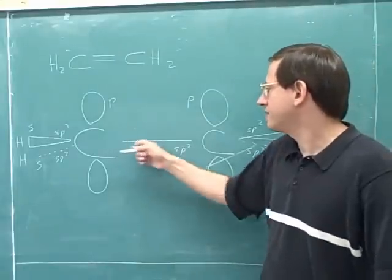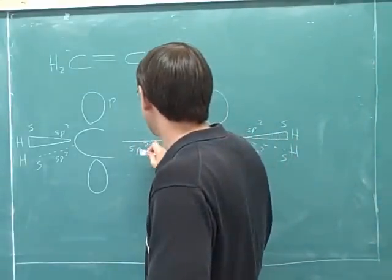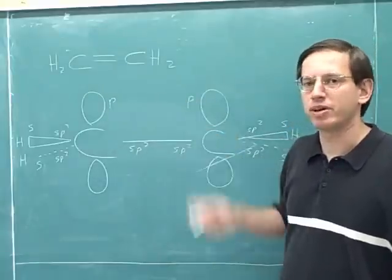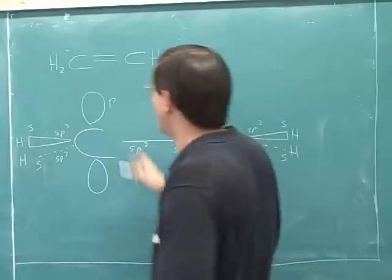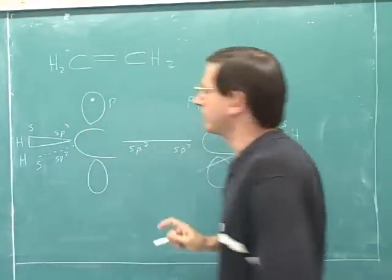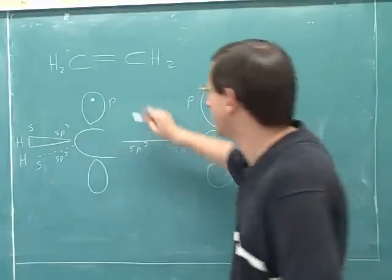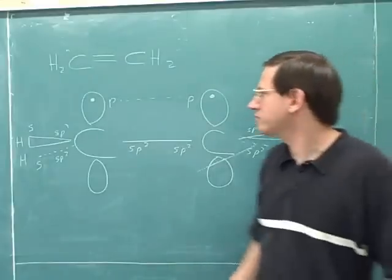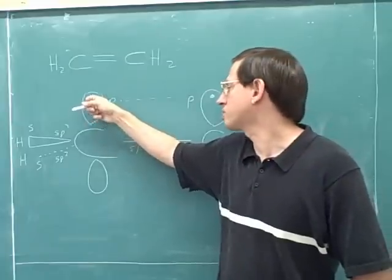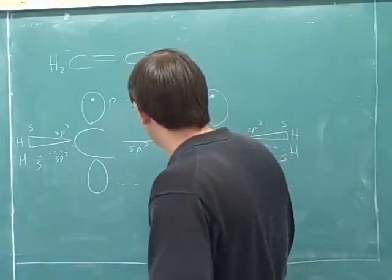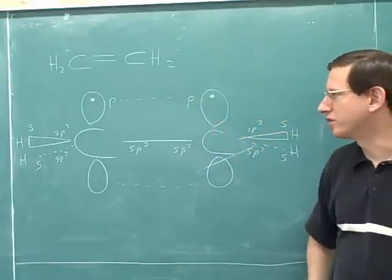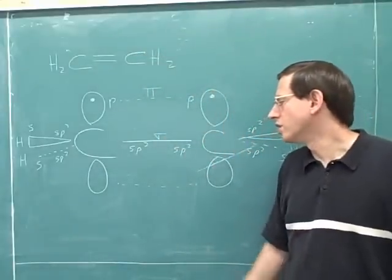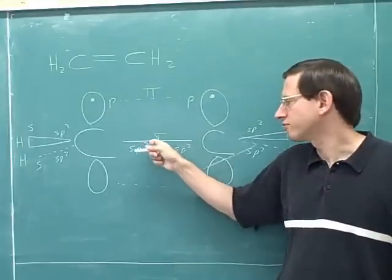Now let's assign our electrons. Remember that this here is our sigma bond, and we have two electrons in that sigma bond. And what about the pi bond? The pi bond is formed from the side-to-side overlap of these two p orbitals. We know there are two electrons in the pi bond — one from each p orbital. We can draw dots to show the bonding interaction between the side-to-side overlap of those two p orbitals. Even though each electron is shown in one lobe, it's really spread over both lobes. So the overlap between the sp2 orbitals forms the sigma bond, and the overlap between the two p orbitals forms the pi bond.